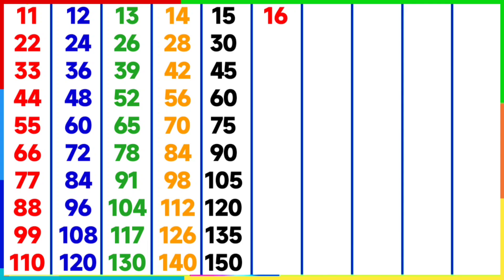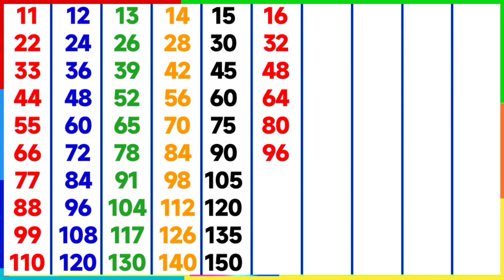Table of 16: 16 ones are 16, 16 twos are 32, 16 threes are 48, 16 fours are 64, 16 fives are 80, 16 sixes are 96, 16 sevens are 112, 16 eights are 128, 16 nines are 144.